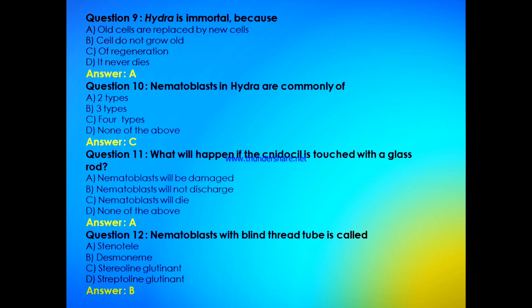Nematoblasts in Hydra are commonly of two types, three types, four types, or none of the above? The answer is C, that is four types. What will happen if the nidocil is touched with a glass rod? Nematoblasts will be damaged, nematoblasts will not discharge, nematoblasts will die, or none of the above? The answer is A, that is nematoblasts will be damaged.